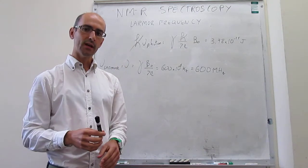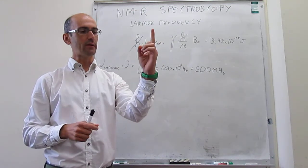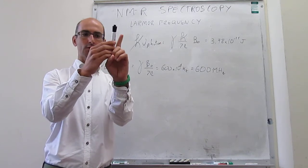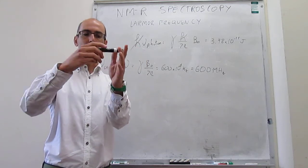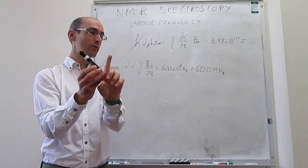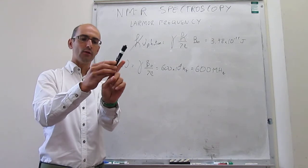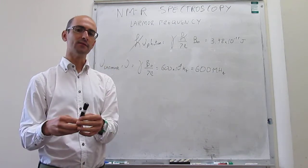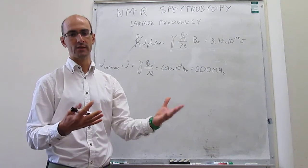A way to understand how this nuclear spin motion takes place is that if you have an external magnetic field, the nucleus kind of wobbles so that its induced magnetic field is pointing either up or pointing down — those are the two states. This wobbling motion is called a precession, and in order to satisfy the resonance condition, the frequency of this precession around the field axis has to be identical to the frequency of the photon you are shining.